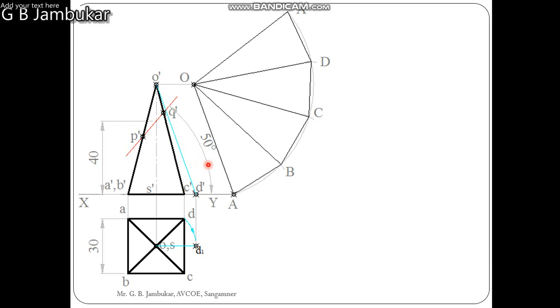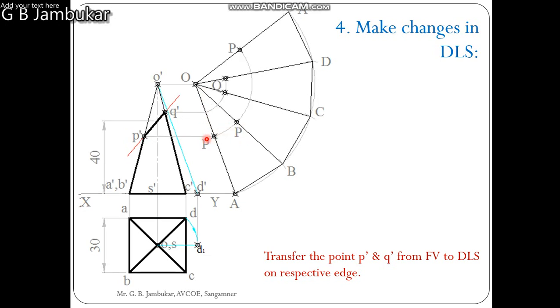We have to transfer these points in the development to get point P and Q. Draw the line parallel to XY through the P, which will intersect OA at point P, OB at point P. From here, draw the arc by taking center O. Similarly, for the Q, locate point Q on OC and OD.